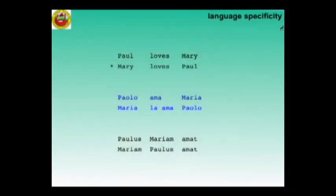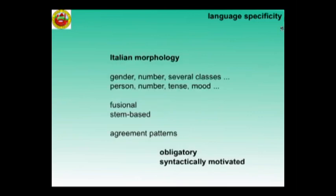In English, if you change the canonical word order, you say something completely different. In Italian, you don't — it's just a different perspective on the same message, but you mark the verb rather than the noun constituents. Latin marks the dependent elements, the nouns.